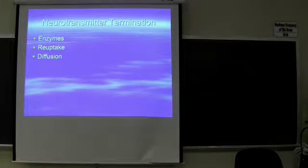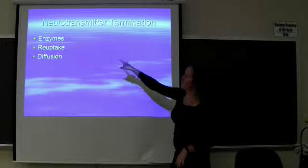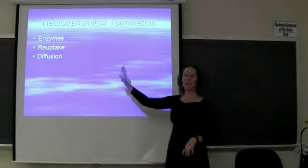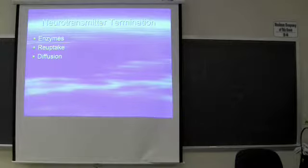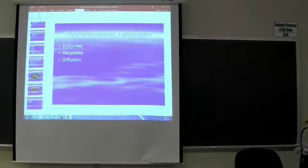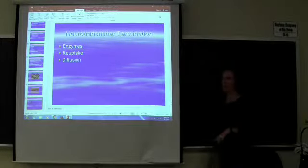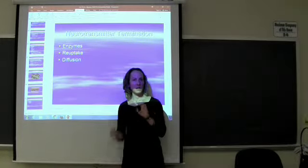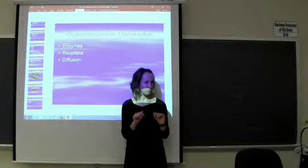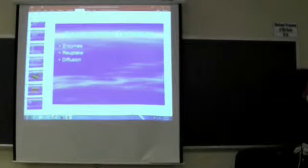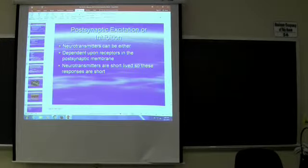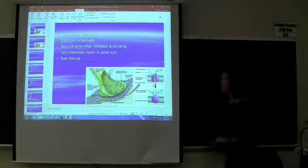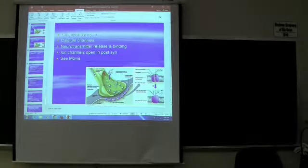To summarize: neurotransmitters can be broken down by enzymes, reabsorbed into the pre-synaptic membrane, or diffused and broken down into substrates. Let's now go over the specific steps at the synaptic cleft, then move into the central nervous system.